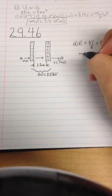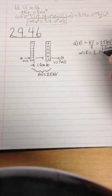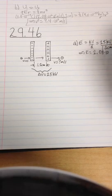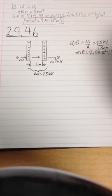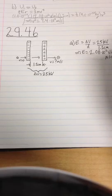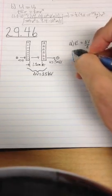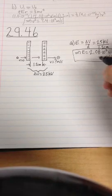Which means that E equals 2.08 times 10 to the 6th volts per meter, or newtons per coulomb, doesn't matter. Although for the next part, it will be more convenient to use volts per meter.